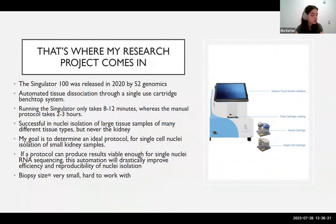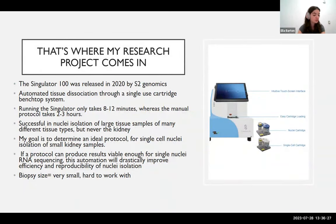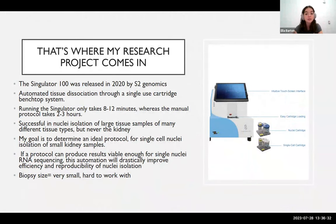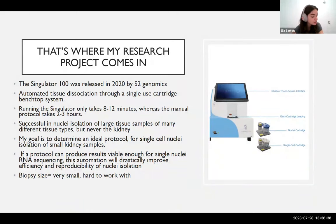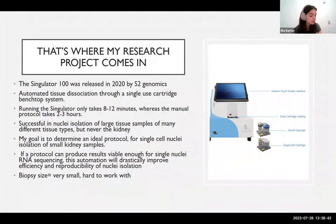In 2020, S2 Genomics released a machine called the Singulator 100, which uses a single-use cartridge bench-top system to automate tissue dissociation. Running the Singulator only takes about 8 to 12 minutes per sample, whereas the manual protocol takes about 2 to 3 hours. It has been successful in nuclei isolation of large tissue samples of many different tissue types, but has never been used on the kidney, let alone small kidney tissue samples.